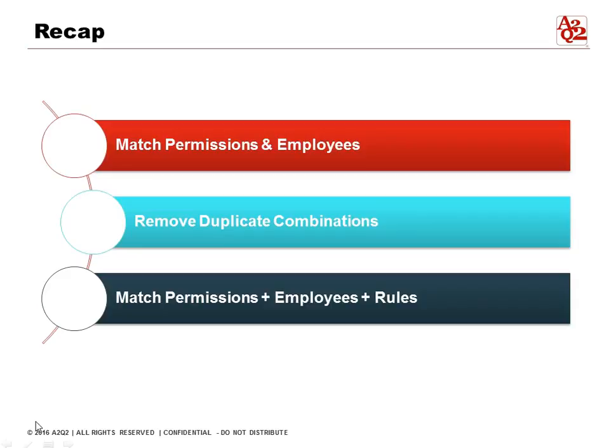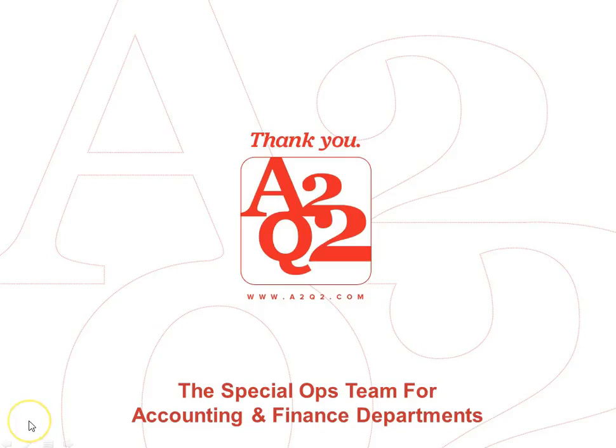To recap: we showed you how to find the permissions and match them with employees, how to remove duplicate combinations of permission names so we're using only the basic ones, and then the formula to match permissions with employees against the four basic rules. We'll see you in the next session when we finish the final analysis. Thanks so much for your time.